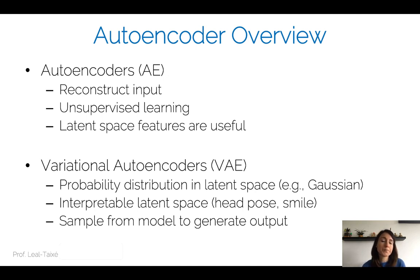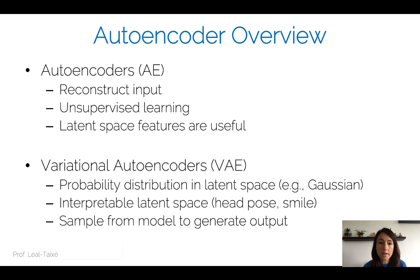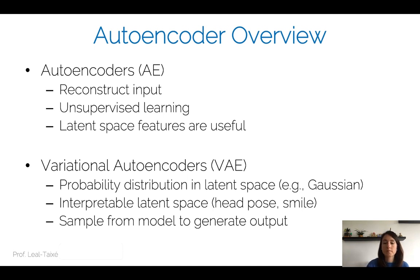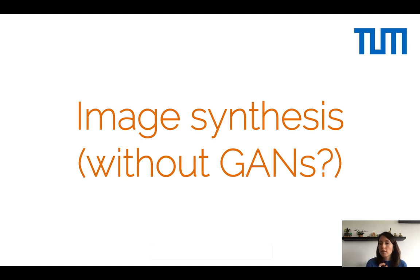As an overview: autoencoders are good for unsupervised learning, and the latent space features are useful. A variational autoencoder is the way to go if you want an interpretable latent space, if you want to sample from the latent space, and actually generate some output. Now that we've talked about image generation, we cover image synthesis — generating a completely new image, but without going into GAN territory.